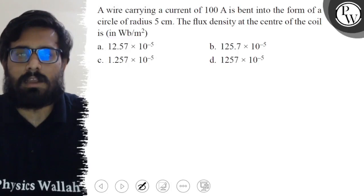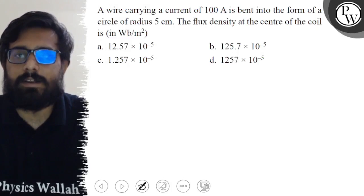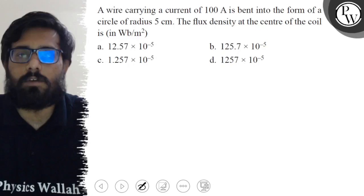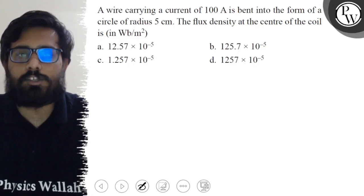Hello bachos, so let's see the question. A wire carrying a current of 100 ampere is bent into the form of a circle of radius 5 centimeter. The flux density at the center of the coil is...